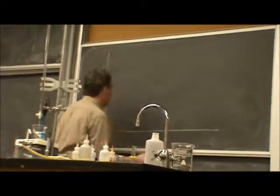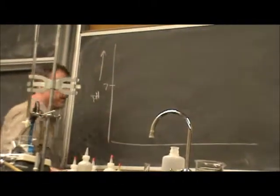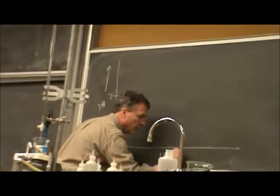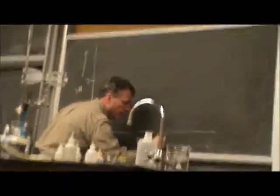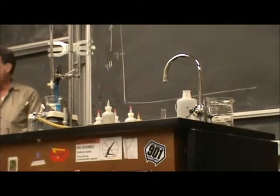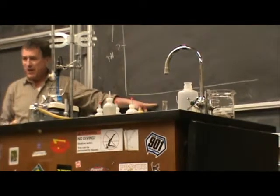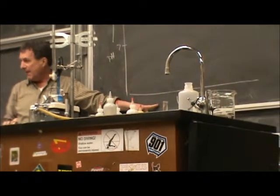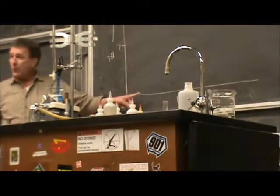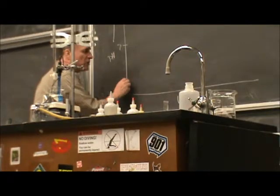If we make a graph, pH on the vertical scale and the volume of hydroxide solution... The graph that we made with the computer is kind of volume on the horizontal axis. It's really time, but I was dripping it in at a constant rate. But if we make a graph of volume of hydroxide solution, the curve looks like this.